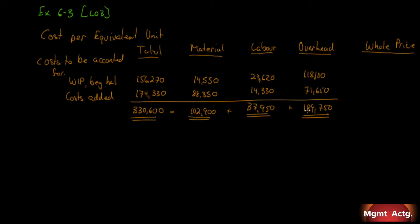Now what we want is — and we figured it out in question 6.2 — our equivalent units. Here we're given our equivalent units, so we don't have to figure them out because we're really just doing the second part of the production report. Our equivalent units of production: for materials we have 1,200 units, for labor we have 1,100 units, and for overhead we also have 1,100 units.